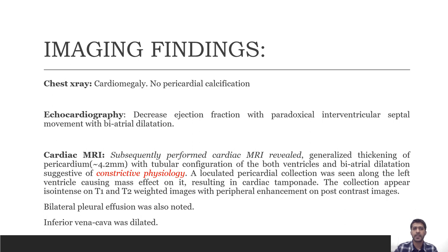The chest X-ray revealed cardiomegaly with no pericardial calcification noted. Subsequently performed echocardiography showed decreased ejection fraction with a paradoxical interventricular septal movement and biatrial dilatation.